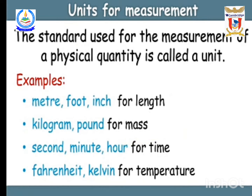Units for measurements: the standard used for measurement of physical quantities is called a unit. There are some standards or ways used to measure physical quantities. For example, meter, foot, and inch are units used to measure length. Kilogram and pound are units for mass — pound is used in the British system. Second, minute, or hour are units for time. Fahrenheit, Kelvin, or Celsius are units for temperature.